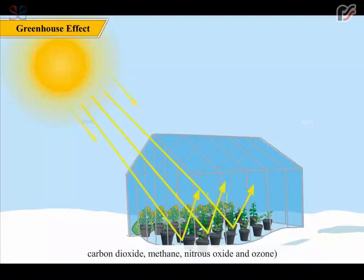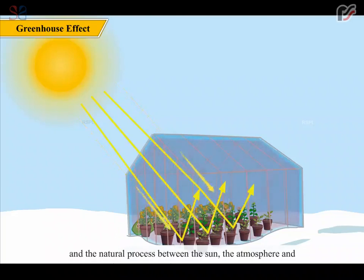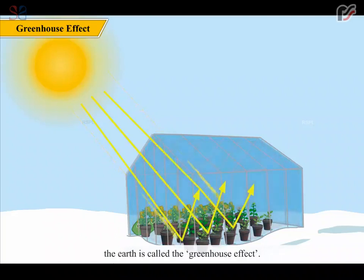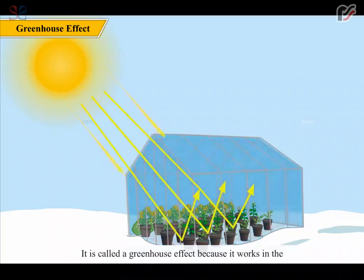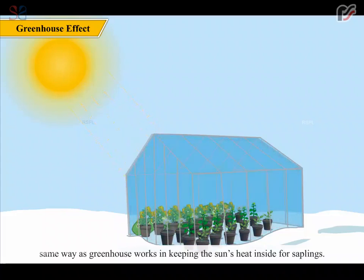Some gases in the atmosphere stop some of the heat from escaping into space. These gases are called greenhouse gases: water vapor, carbon dioxide, methane, nitrous oxide, and ozone. The natural process between the sun, the atmosphere, and the earth is called the greenhouse effect, because it works in the same way as a greenhouse in keeping the sun's heat inside for saplings.